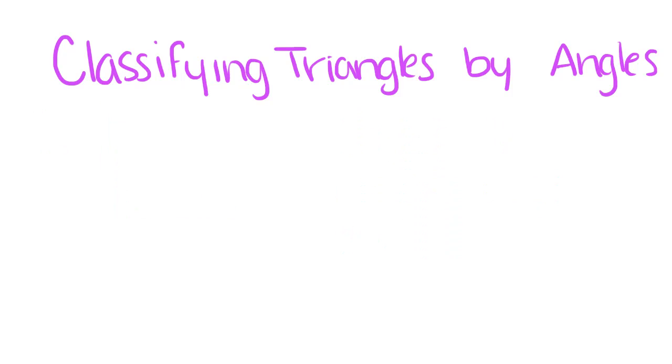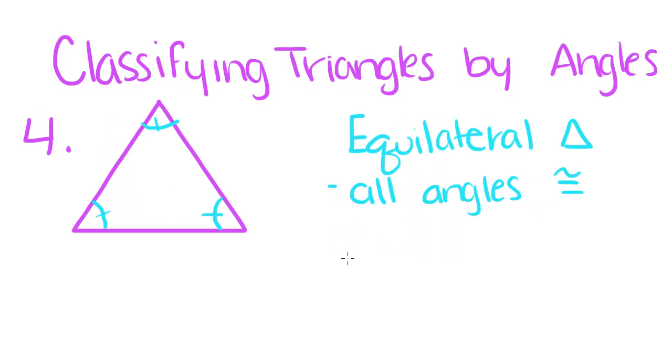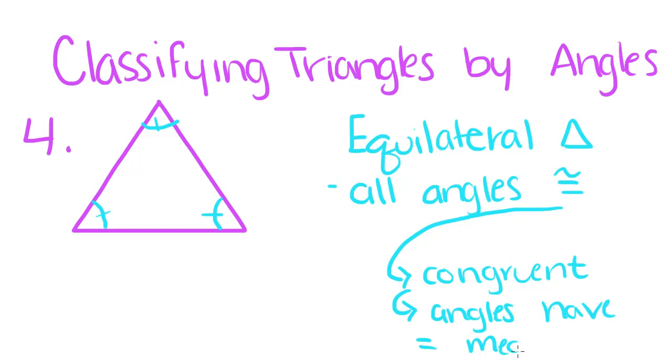Now, our fourth kind of triangle is an equilateral triangle. And like an equilateral triangle whose sides are congruent, all their angles are also congruent. So, this symbol just means congruent, and when angles are congruent, they have equal measure.